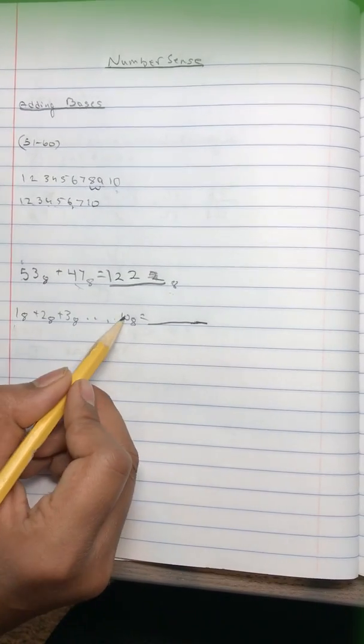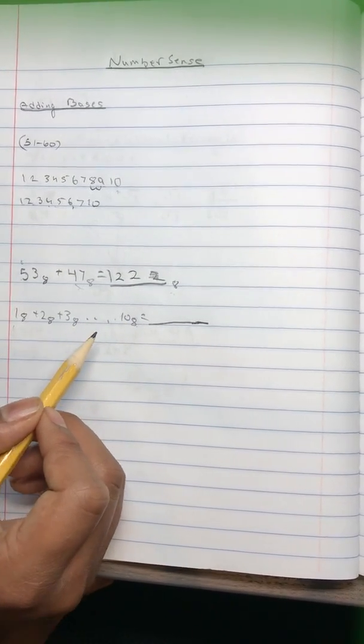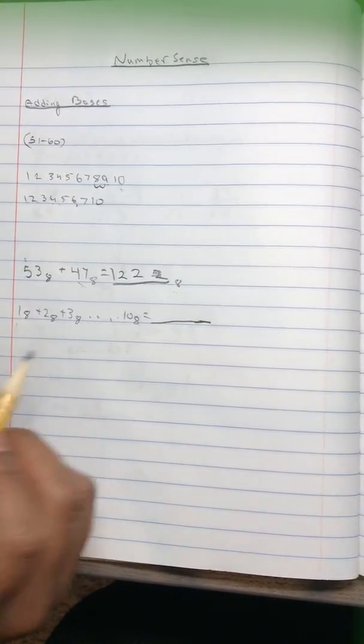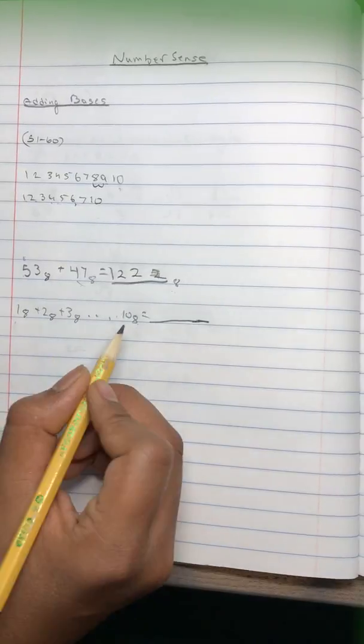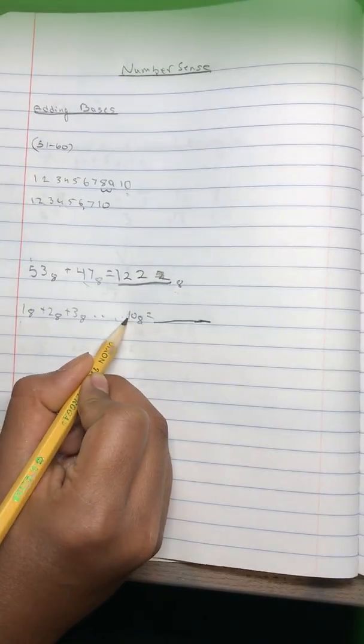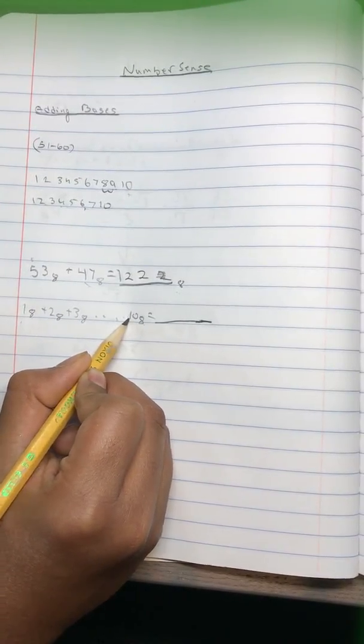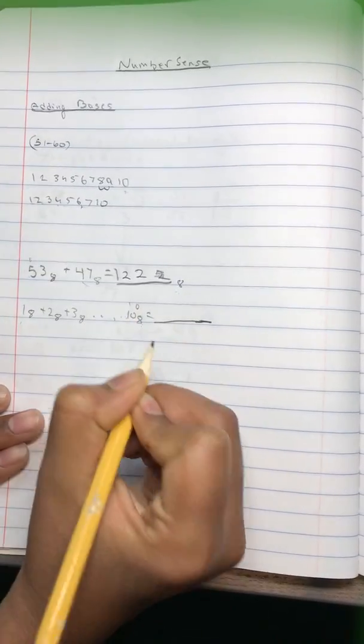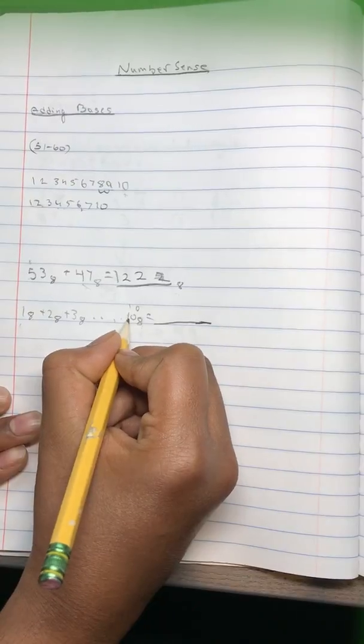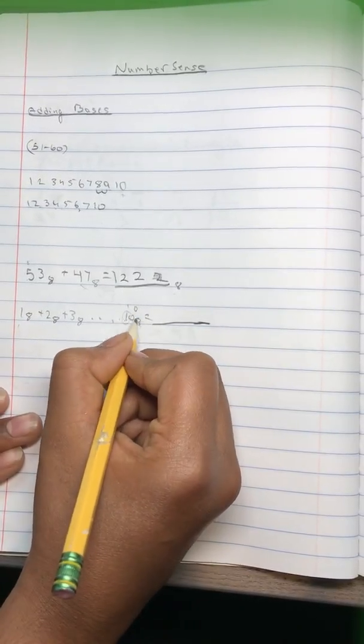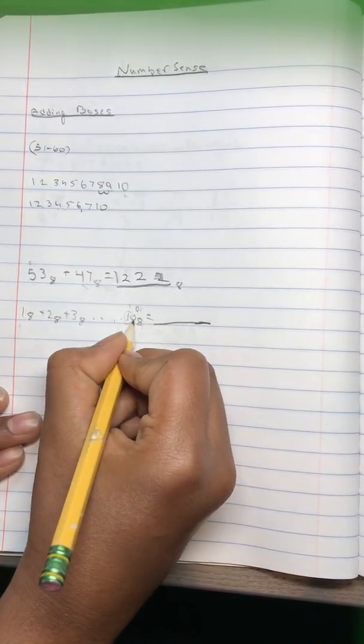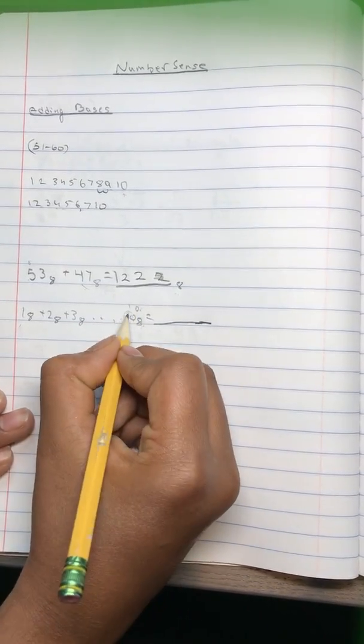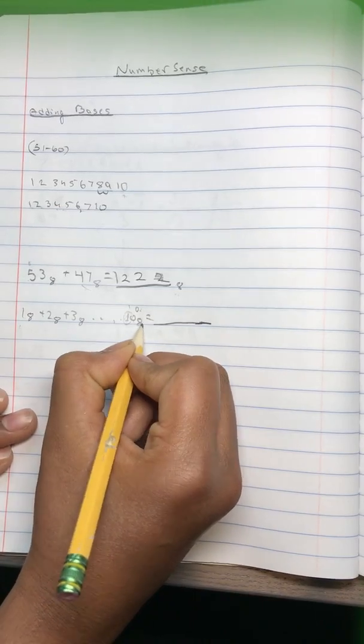First, convert this 10 base 8, the last number, into base 10. So basically how we do this is you multiply the digits by powers of 8. You do 8 to the power of 1 times this number and 8 to the power of 0 times this number and add them. So 8 to the power of 1 is 8, 8 times 1 is 8. And 8 to the power of 0 is 1, 1 times 0 is 0. 8 plus 0 is 8.